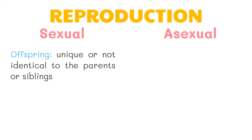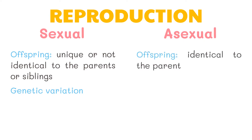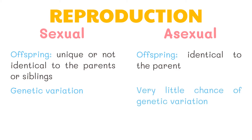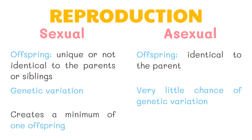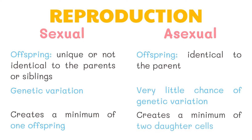The offspring is unique and not identical to the parents or siblings, since it will be a combination of two sets of characteristics. This leads to genetic variation of the offspring. Asexual reproduction occurs when only one parent is involved in making a new creature. Since there is only one parent, all the traits of the mom or dad are passed on to the baby. As a result, the parent and child are identical with very little chance of variation. Sexual reproduction creates a minimum of one offspring, while asexual reproduction creates a minimum of two daughter cells.